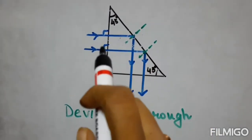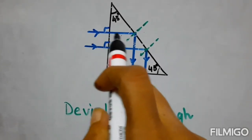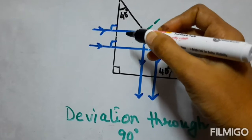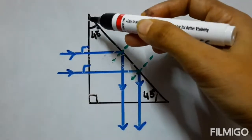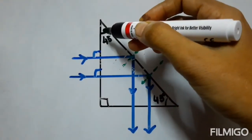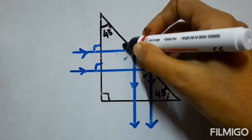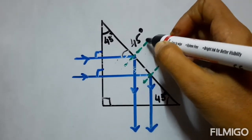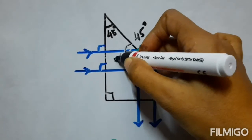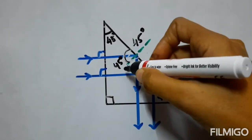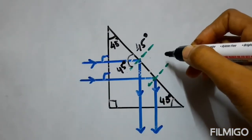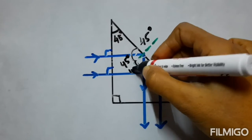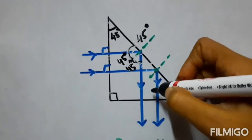In the first case, two parallel rays pass undeviated because they are incident at right angles and strike the second surface of the prism. Since this is a right isosceles prism, this angle is 45°, this is 90°, so this angle will also be 45°. A perpendicular is drawn, therefore the angle of incidence here will also be 45°. Since 45° is more than the critical angle of glass, which is 42°, total internal reflection will occur.